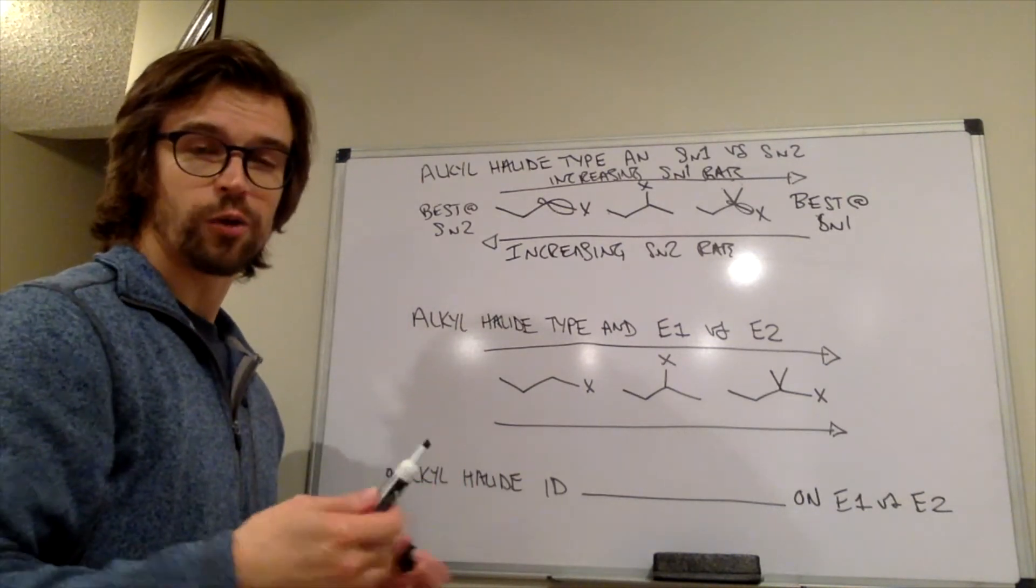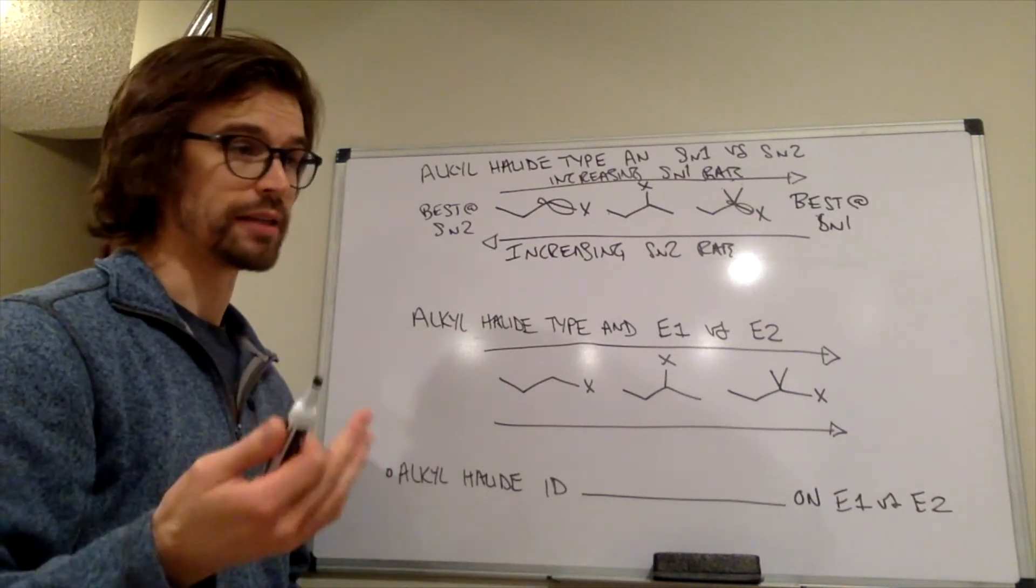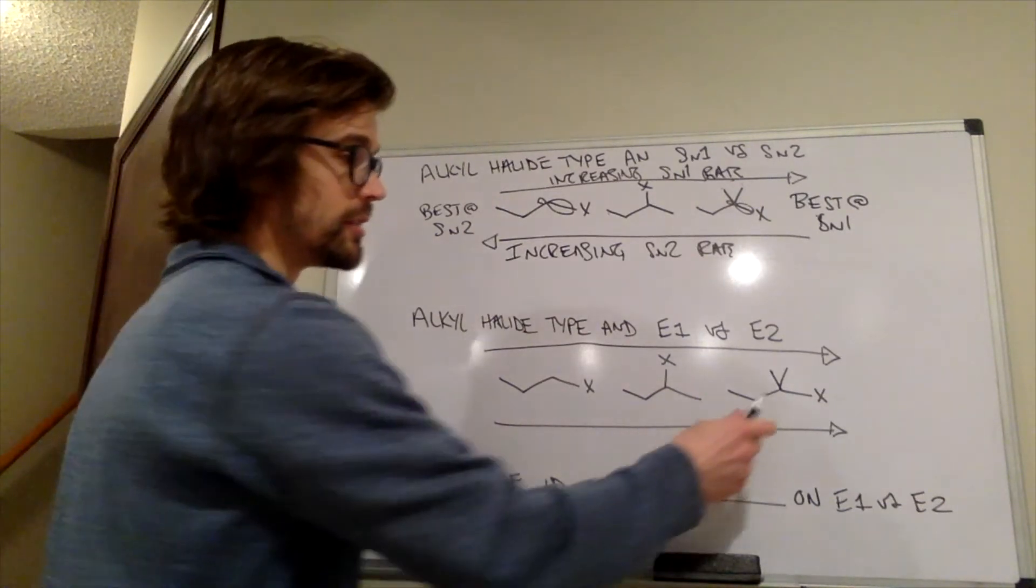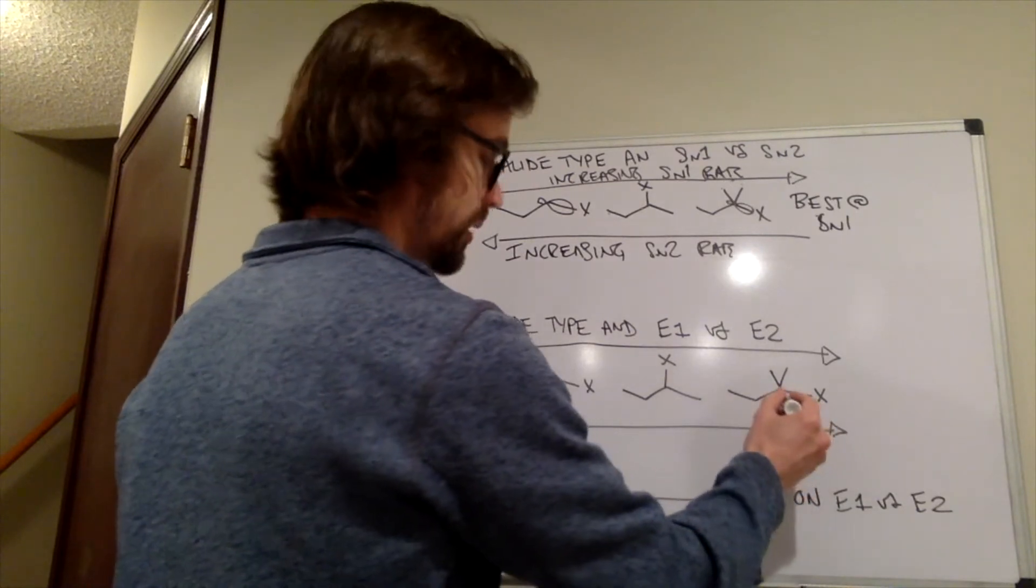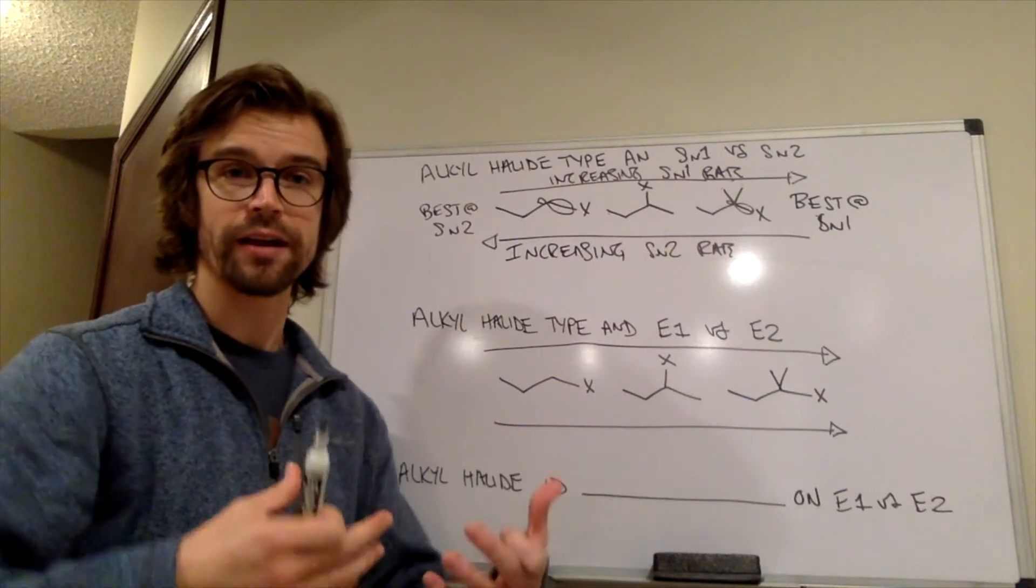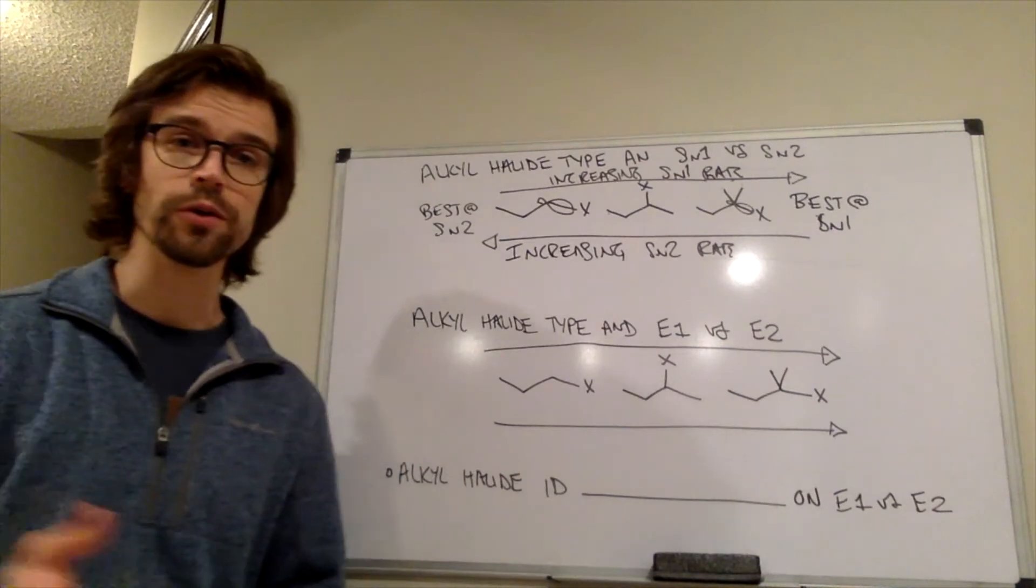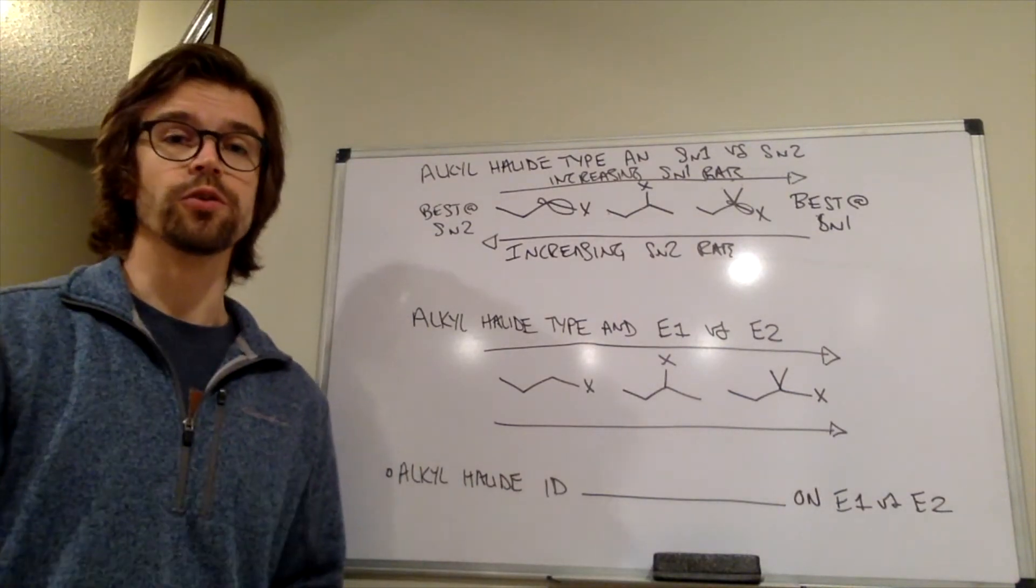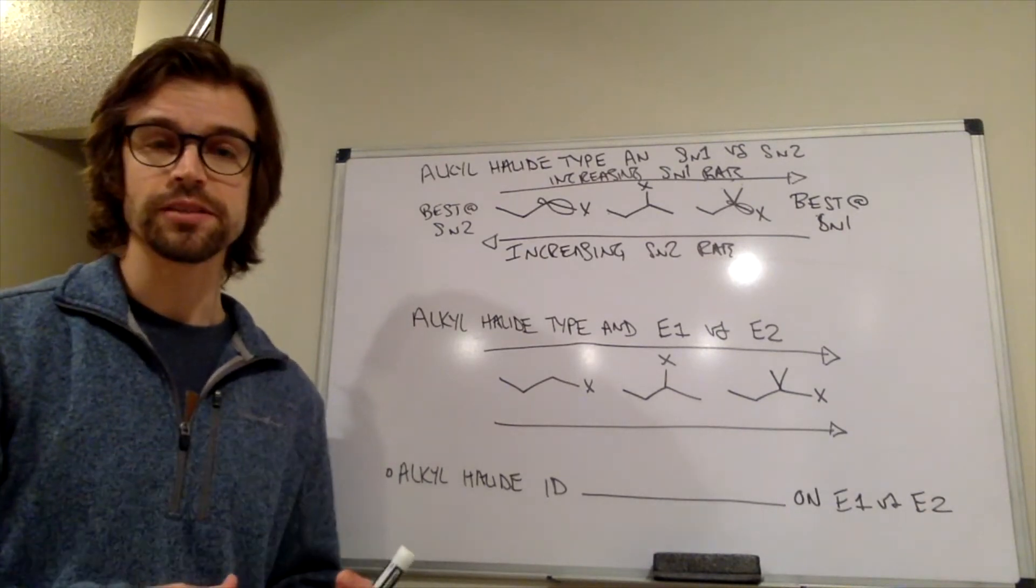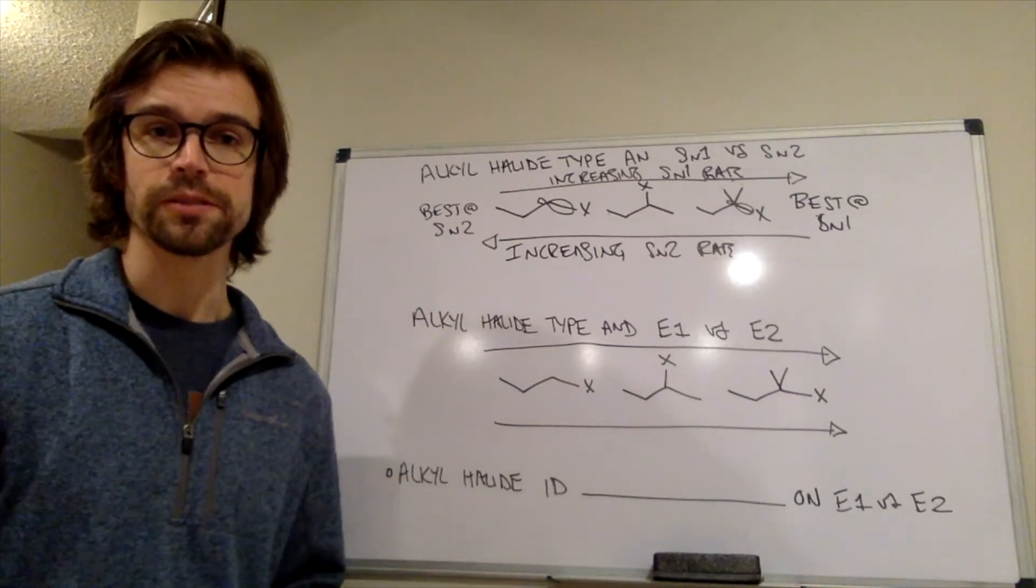it's going to be based on the same factors that SN1 reaction would be based on, the carbocation stability. This is going to form the most stable carbocation. So this would be the best at SN1. We want a really stable carbocation because formation of that carbocation is the rate determining step. What about E2? What impacted the rate of E2?